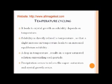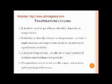Temperature cycling leads to crystal growth as solubility depends on temperature — the solubility increases as the temperature increases. Solubility is directly related to temperature, so a slight increase in temperature leads to an increased equilibrium solubility. A drop in temperature results in a supersaturated solution surrounding each particle. Precipitation occurs to relieve the supersaturation, and crystal growth occurs to relieve the energy and move from a metastable to a stable state.